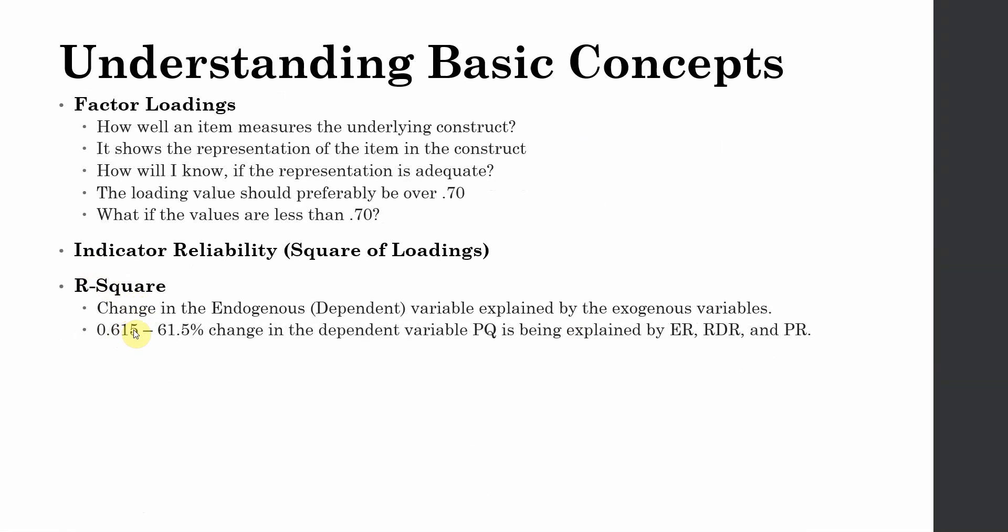Now R-square means change in endogenous dependent variable explained by the exogenous variables. It could be one variable or more than one variable. For example, let's say I've got an R-square value of 0.615. So 61.5% change in the dependent variable, let's say my dependent variable is perceived quality and it is being influenced by three variables: ER, RDR, and PR.